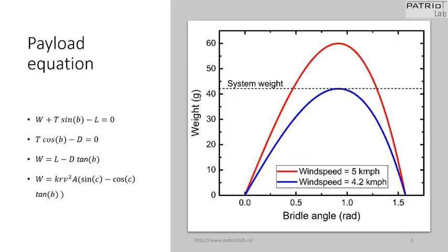Another important consideration is payload capacity. We calculated the payload capacity of our KiteCAM system using force-balancing equations — for stable flight, the forces on the kite must be balanced. Using the first two equations on screen and the previously derived force equation, we found the payload capacity of our setup as given in the fourth equation. Payload depends on wind speed and bridle angle, as the other terms generally remain constant during flight. The plot on the right shows payload versus bridle angle for different wind speeds; our system is light enough to achieve lift at just 4.2 km/h.